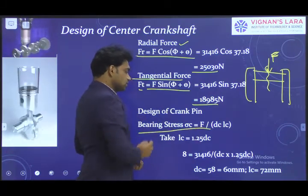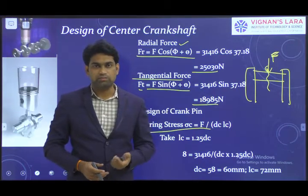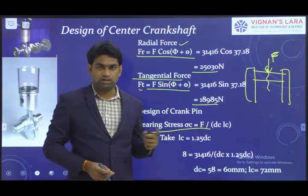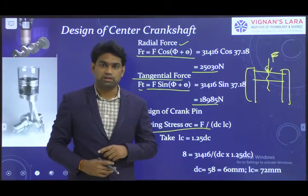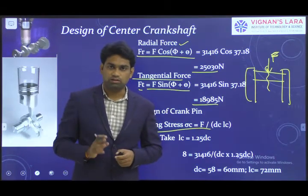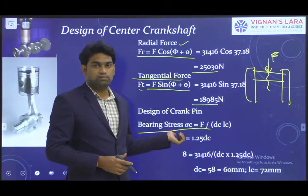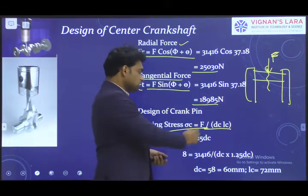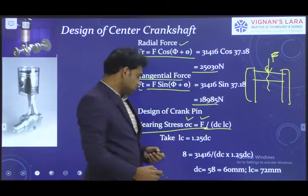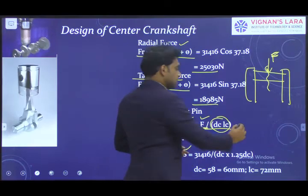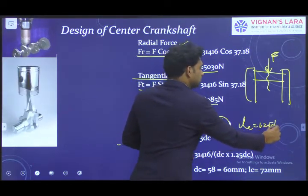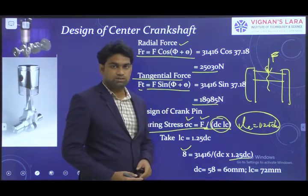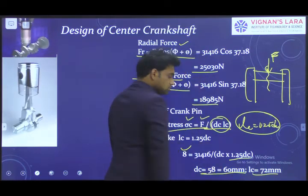From the crushing/bearing stress relation: σc = bearing load / bearing area = F / (LC × DC). In the design of the crank pin, the total gas load F is taken directly as the bearing load. Since LC is unknown, we use the proportion LC = 1.5 × DC (or 1.25 × DC), substituting length in terms of DC. From that, we calculate DC = 69 mm and LC = 72 mm — these are the dimensions of the crank pin.